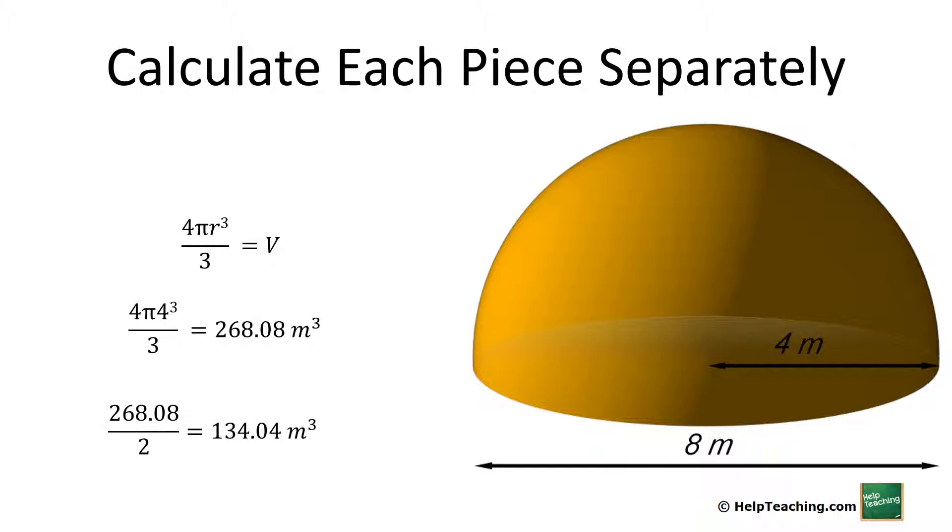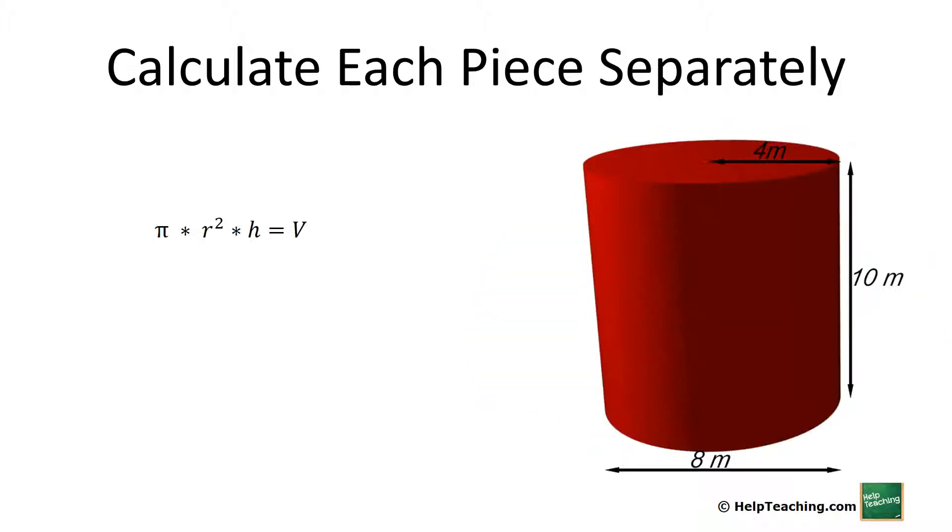For the body we have a cylinder, or really just a circular prism. We calculate the volume as the cross-section π r² times the height. We already know our radius and height, so we plug those in and get 502.65 cubic meters.